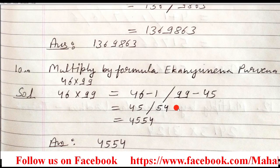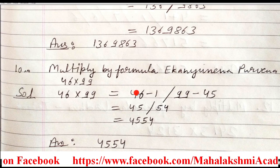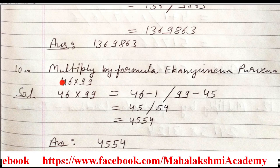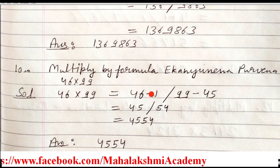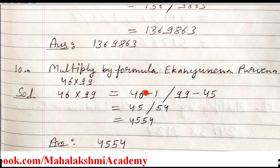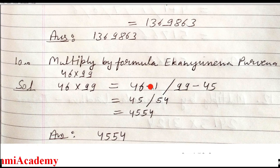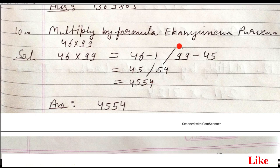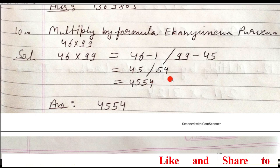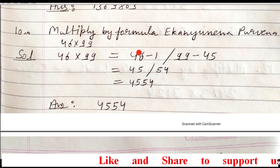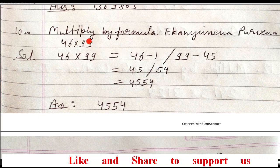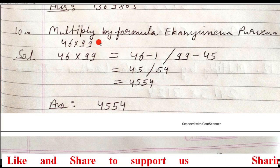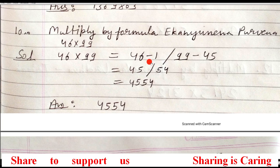In the next question, Ekanuna is the same. Here 46 is there, so 46 minus 1 is 45. Subtract 45 from 99 and you get the answer. Remove the slash. Very simple method, but recognition is very important. In Ekanuna Purvena, if nines come here — if 999 comes — you should know to do Eka nu na and subtract.